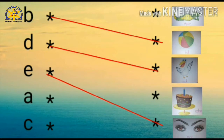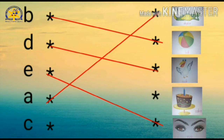Now next comes letter A. A for an alligator. So come on, match it with alligator. A, an alligator. Correct! Very good! Well done children!